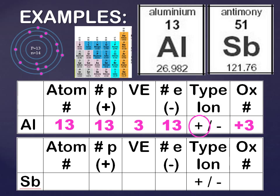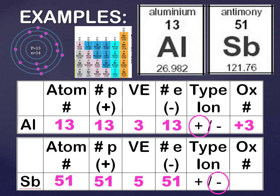Next, antimony. Looking at the periodic table, its atomic number is 51. Number of protons is the same — 51. For valence electrons, you find antimony on the periodic table; it's in group 15, so that would be 5. Number of electrons equals number of protons, so 51. For type of ion, valence electrons is 5 — would it be easier to gain 3 or lose 5? It's easier to gain 3, gaining a negative charge, so it would be negative 3.